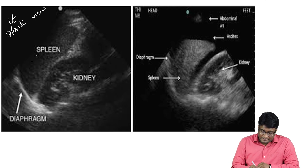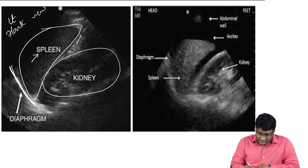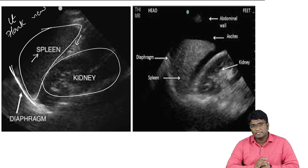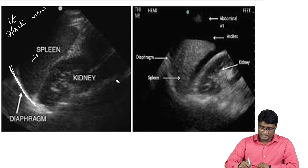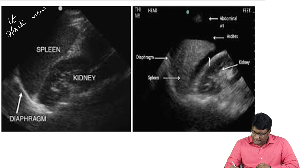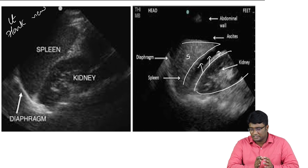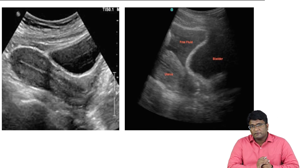On the left flank view, you can see the spleen, the diaphragm as a white area, and the kidney. In a normal view, you see normal fat around the kidney with no collection. In a positive finding, there is a hypoechoic collection around the spleen — perisplenic collection — again indicating FAST positive.